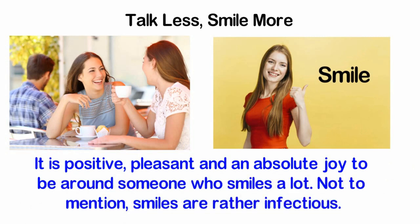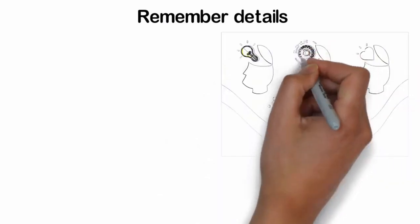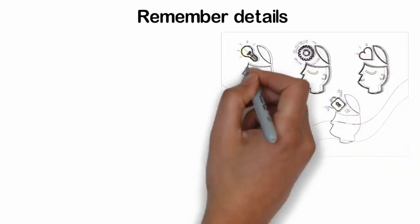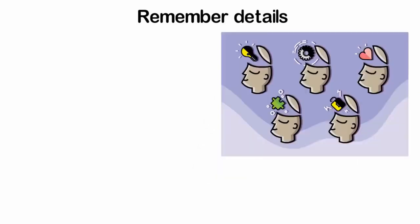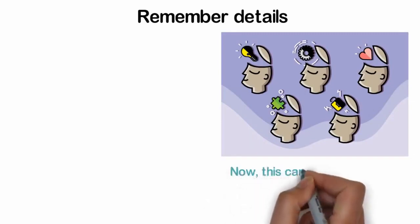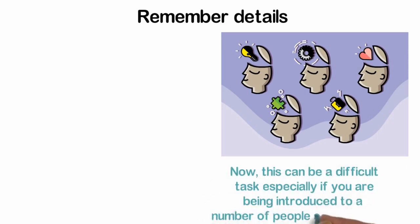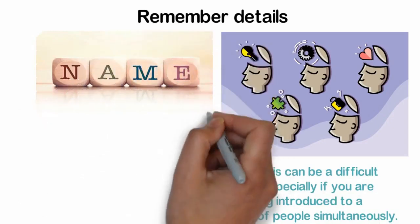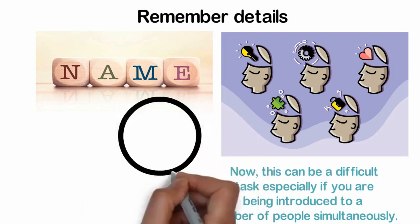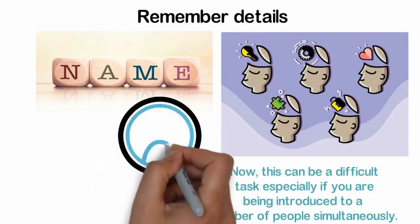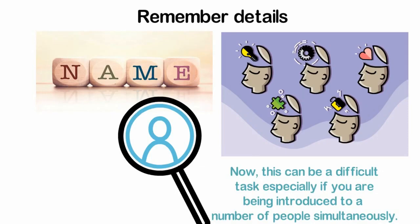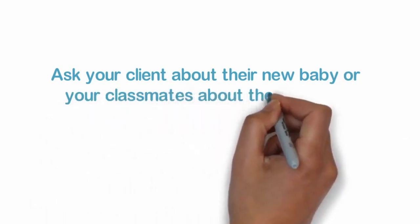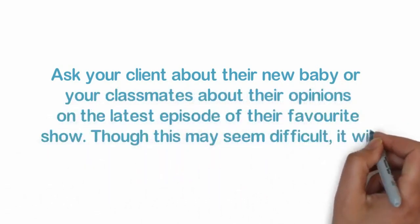Remember details. Pay attention to details. An often overlooked yet rather significant characteristic of people with charm is that they are extremely good at remembering names. Knowing people's names instantly sets you apart and also makes other people feel good. Now this can be a difficult task, especially if you're being introduced to a number of people simultaneously. Try repeating their names back to them when you speak to them, or maybe introducing them to somebody else soon after so that their name sinks in. You can also try alliteration or rhyming techniques to remember names. Remember details about the person from your conversations with them so that you can make references to them at a later date. Ask your client about their new baby or your classmate about their opinions on the latest episode of their favorite show. Though this may seem difficult, it will go a long way in making a lasting impression.